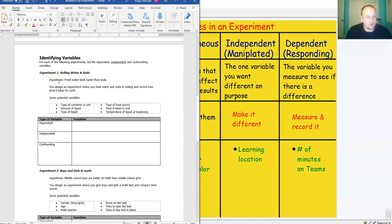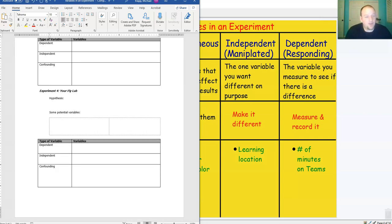For example, this first one asks you about fresh water versus soda. You have to figure out what the dependent is, what the independent is, and then any potentially confounding variables.